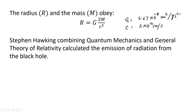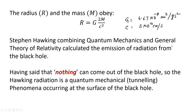Hawking combined quantum mechanics and general relativity to calculate the emission of radiation from the black hole. We said that no information comes out of black holes, so how does radiation emerge? This is a quantum mechanical idea based on tunneling — a particle, even if it sees a barrier higher than its energy, can still tunnel as a wave. The Hawking radiation is really the quantum mechanical tunneling phenomenon occurring at the surface of the black hole.